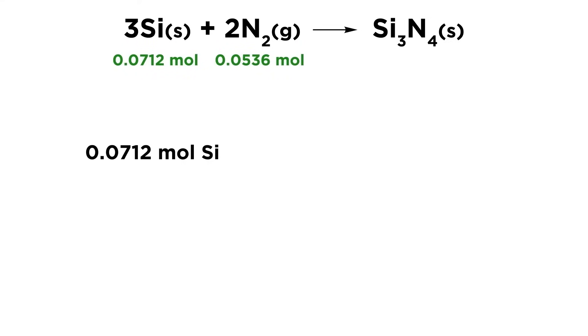One strategy we could use would be to take the moles of one substance and see how many moles of the other are required for it to react completely. For example, this many moles of silicon times this stoichiometric ratio gives us the number of moles of nitrogen that would be required for all of the silicon to react.